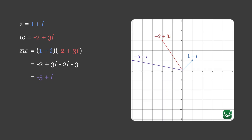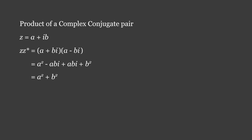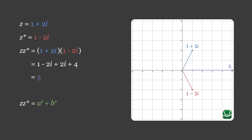An especially useful result occurs when we take the product of a complex conjugate pair. For z equals a plus bi: z times z* equals (a plus bi)(a minus bi), which equals a squared minus abi plus abi minus b squared i squared. Simplifying i squared as negative 1, we get a squared plus b squared. This is a purely real complex number, as Im(z times z*) equals 0. For example, where z equals 1 plus 2i and z* equals 1 minus 2i: z times z* equals 1 minus 2i plus 2i minus 4i squared, which gives the result 5, confirming the rule z times z* equals a squared plus b squared.